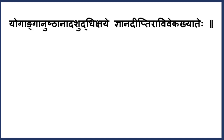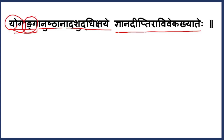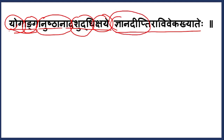Let's see what the sutra says here: Yoganga Anushthana Asuddhikshaye Jnana Diptih Aviveka Khyateh. If you split and spread the sandhi in this line, it becomes: Yoga Anga Anushthana, Asuddhikshaye, Jnana Diptih, Aviveka Khyateh.